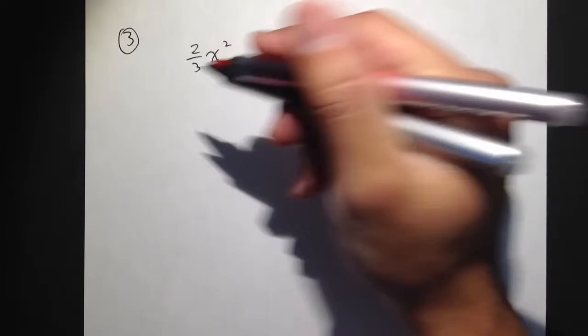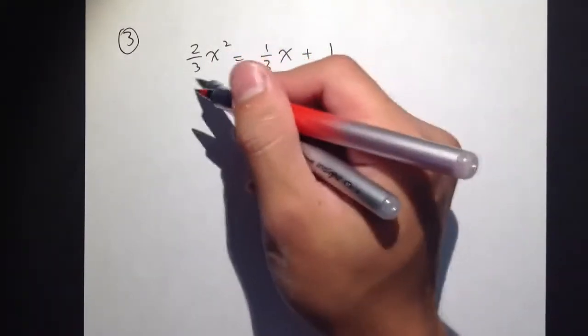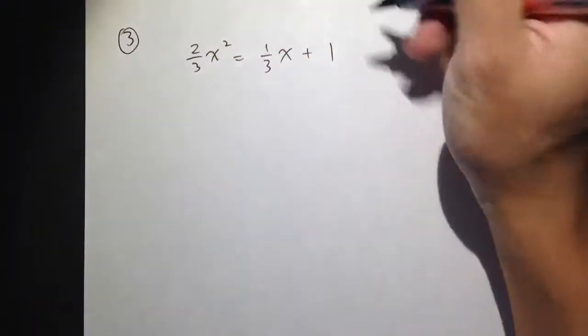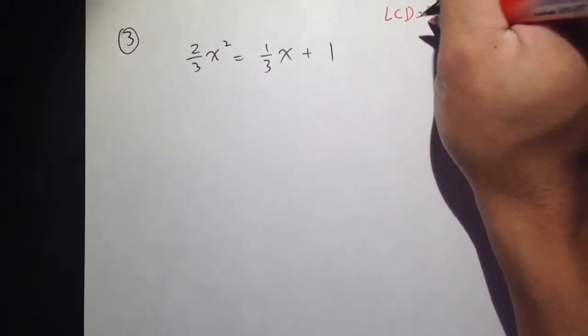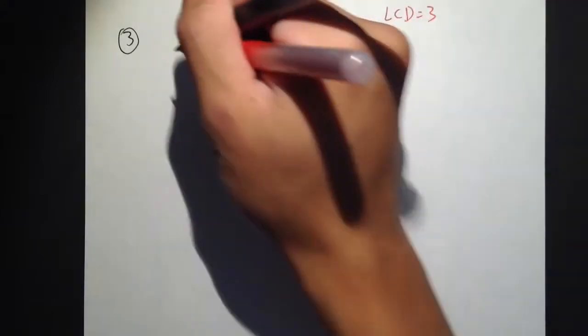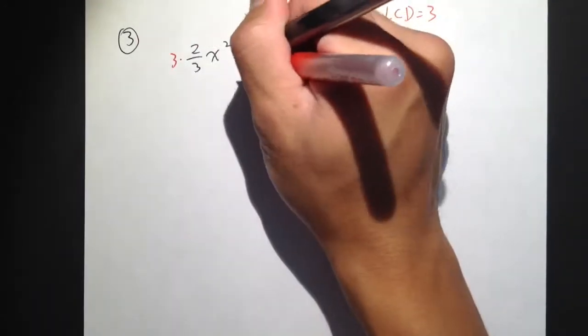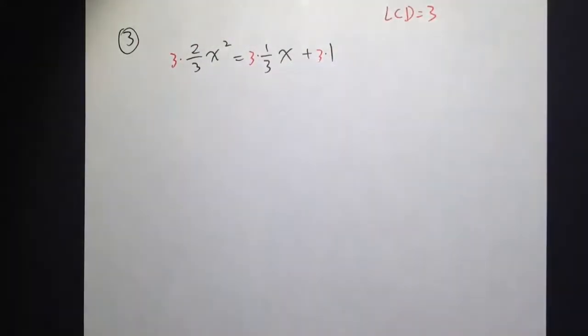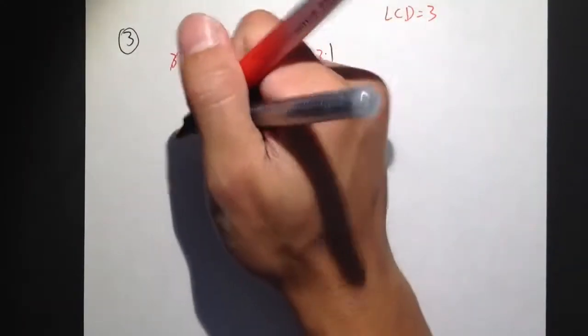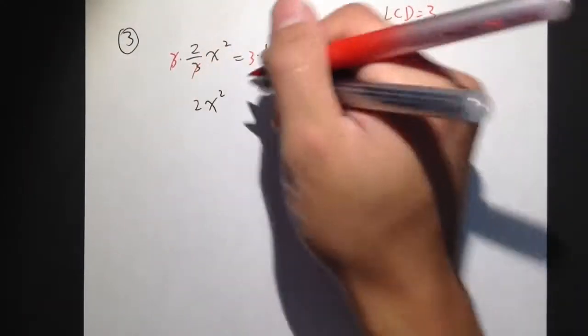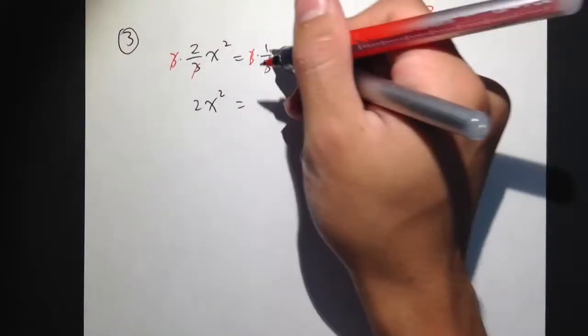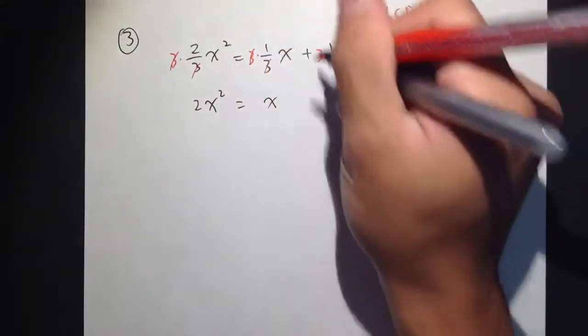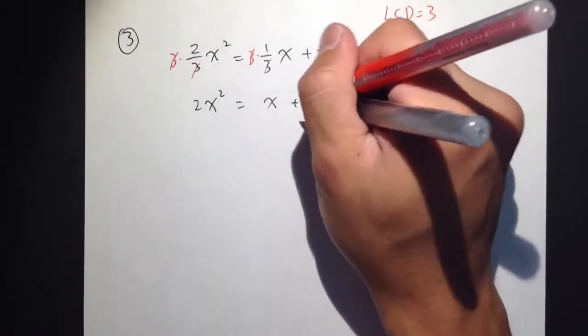So why don't we look for the lowest common denominator? In this case, we just have the 3, so the lowest common denominator is equal to 3. We are going to multiply everything by 3. This and that will cancel out. We just get 2x squared equals to this 3 and that 3 cancels out. We have just 1x here plus 3 times 1 is just 3.